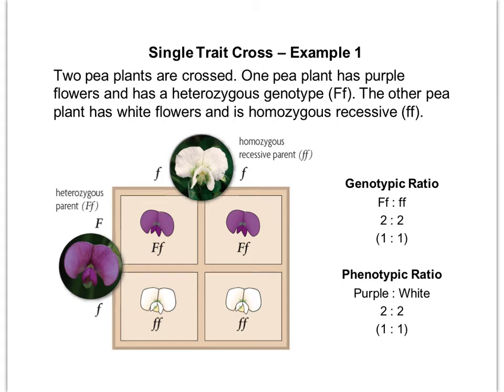Here we've actually done the Punnett square. You can see that we've taken the capital F and crossed it over, and the lowercase f we've crossed over as well, matching them up for each combination. These outcomes represent the possible outcomes of the offspring — so this isn't what's definitely going to happen, it's just what's probably going to happen.